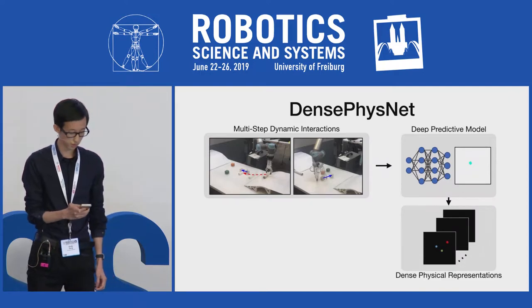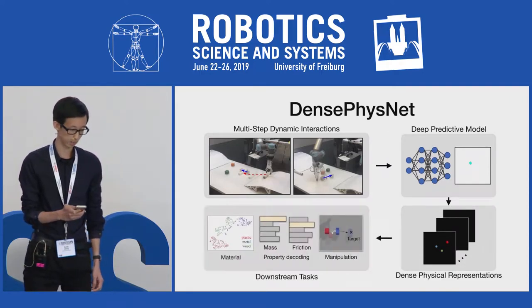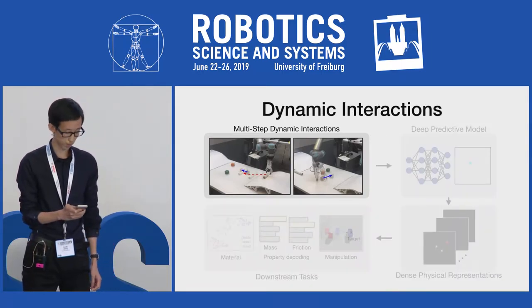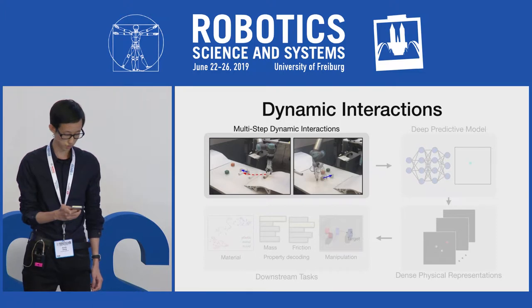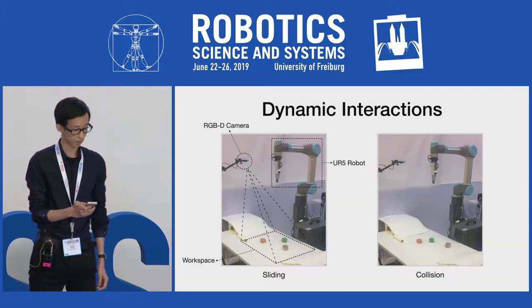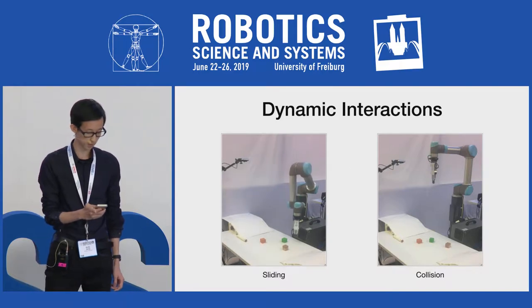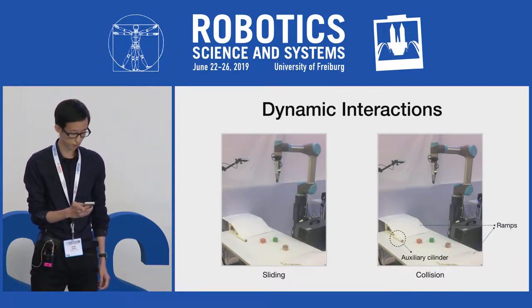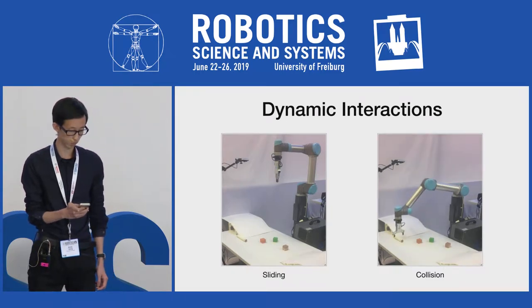This leads to more accurate and efficient manipulation in downstream tasks. We designed two types of dynamic interactions to accentuate the physical properties of objects: sliding and collision. For sliding, the robot executes a push at high speed so that the object can slide after the push. For collisions, the robot grasps an auxiliary cylinder and lets it roll down a ramp to collide with an object.